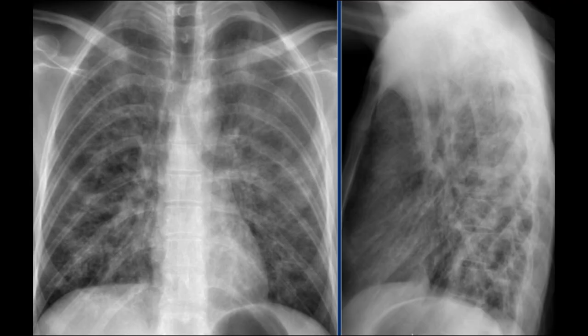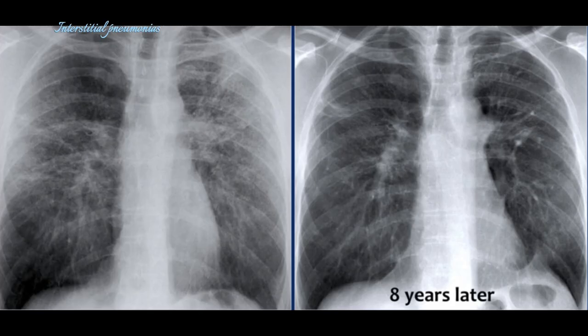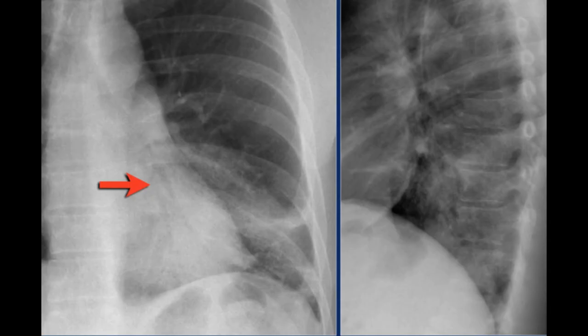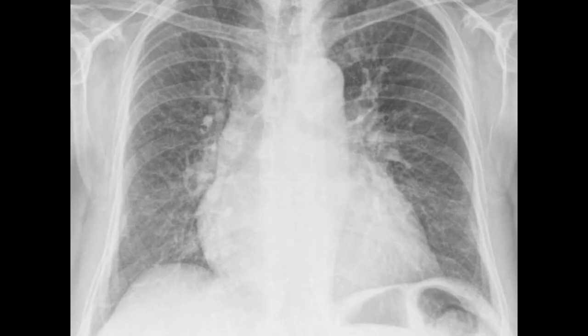Infiltrates are another type of opacity but differ from consolidations in their appearance. They are patchy or hazy areas of increased density, often scattered throughout the lung fields, caused by inflammatory cells and fluid filling the interstitial spaces between the alveoli. Infiltrates are commonly seen in interstitial lung diseases or early stages of infections.